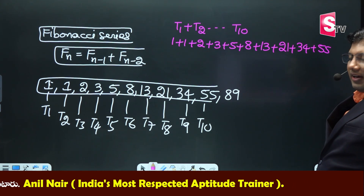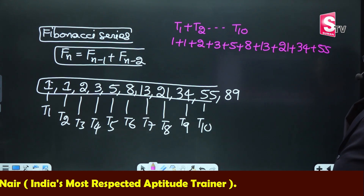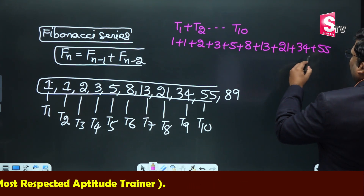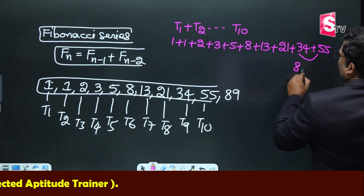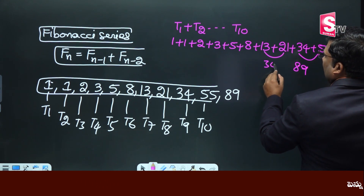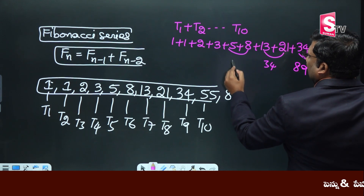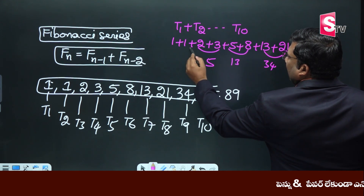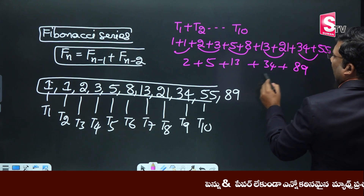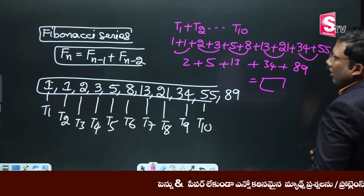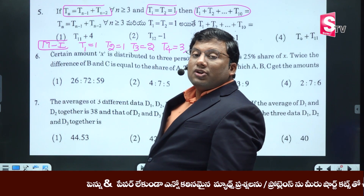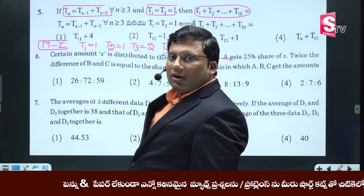So, up to 55. Add the first one: 1, 1, 2, 5, 13, 18, 34. The sum T1 to T10: T11 and T12 are going to be key values.